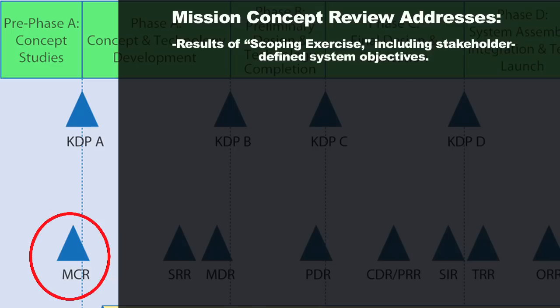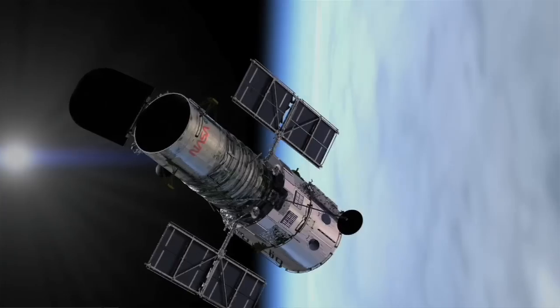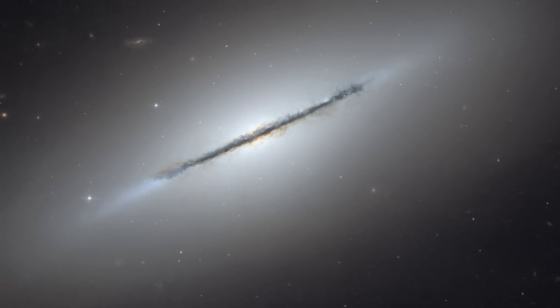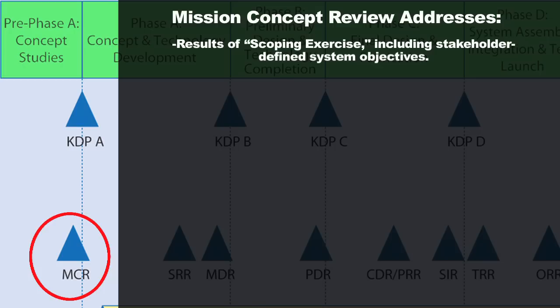Think of the scoping exercise as where stakeholders have defined what they want the system to be able to do — when you put it all together and fly the satellite in space, what are the primary objectives as defined by stakeholders, who could be scientists, people at NASA headquarters, or elsewhere in the federal government who have helped define what this system needs to be capable of doing to be successful. This Mission Concept Review will look at whether you clearly define the stakeholder expectations for the system when it becomes operational.